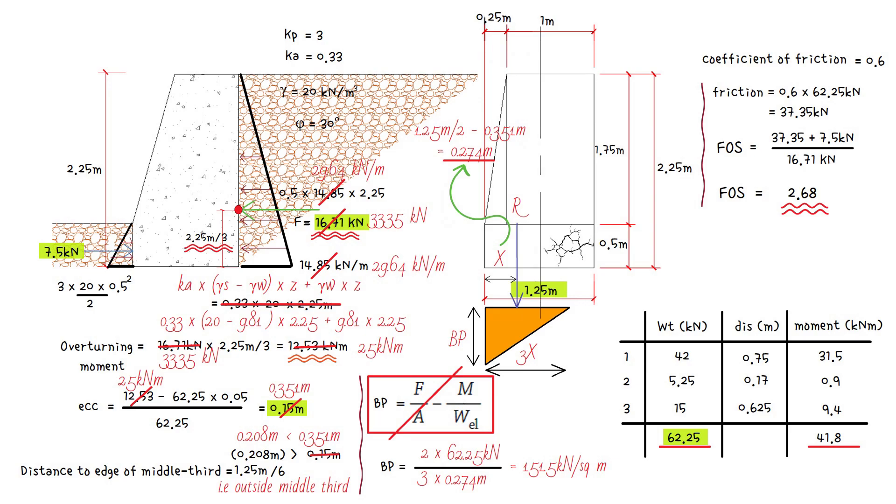The loss of tensile stress means that the value of 151.5 kilonewtons per square meter is greater than the value obtained in the previous video, 85.7 kilonewtons per square meter. We can therefore conclude that when tensile stress cannot be supported, the equation used in the previous video can only be used if the vertical resultant force lies within the middle third of the base.